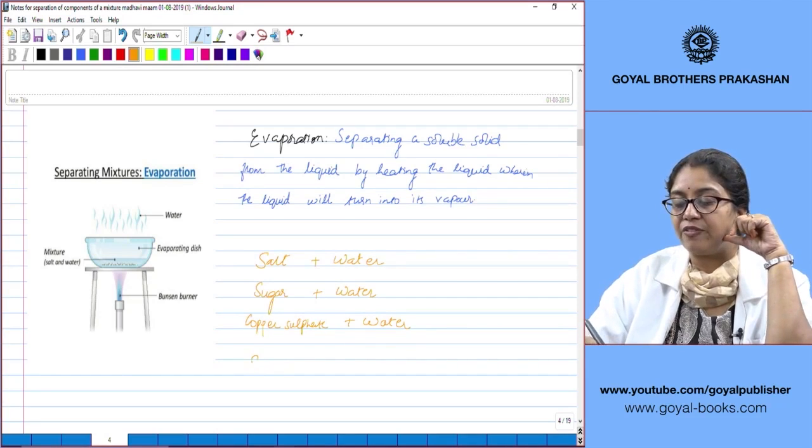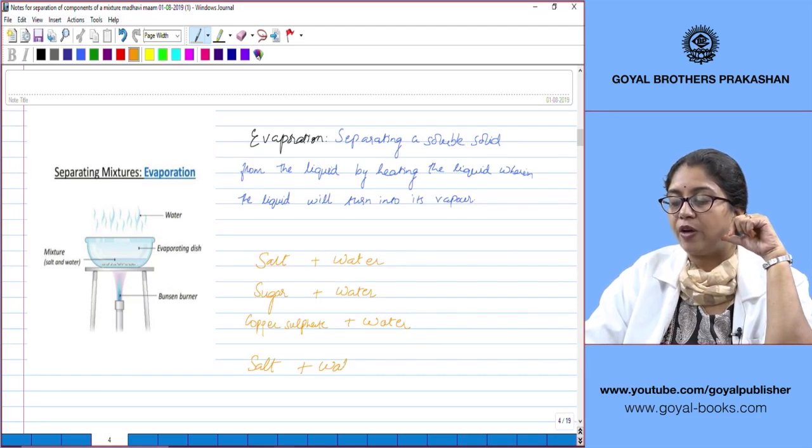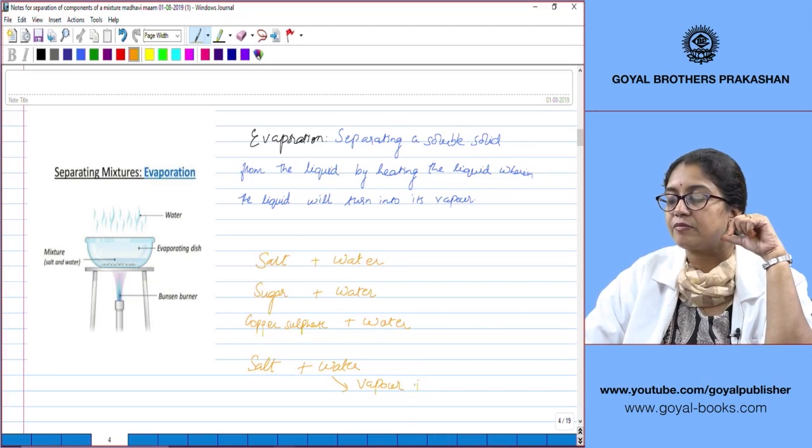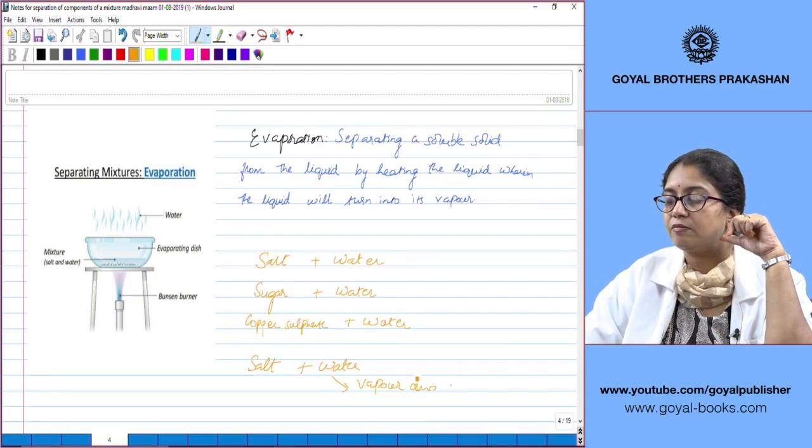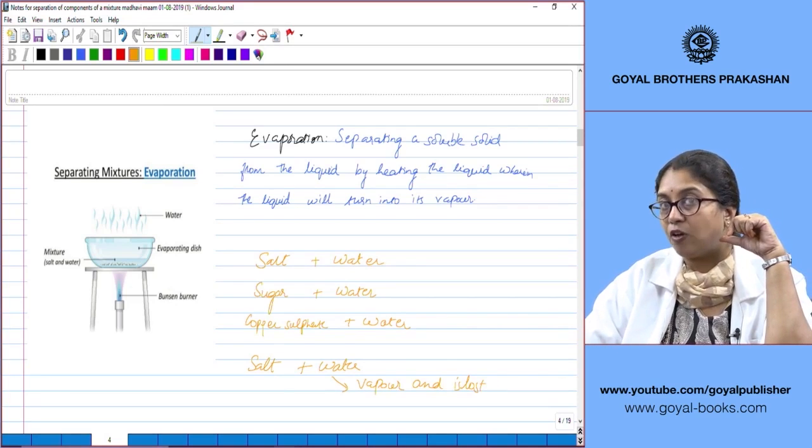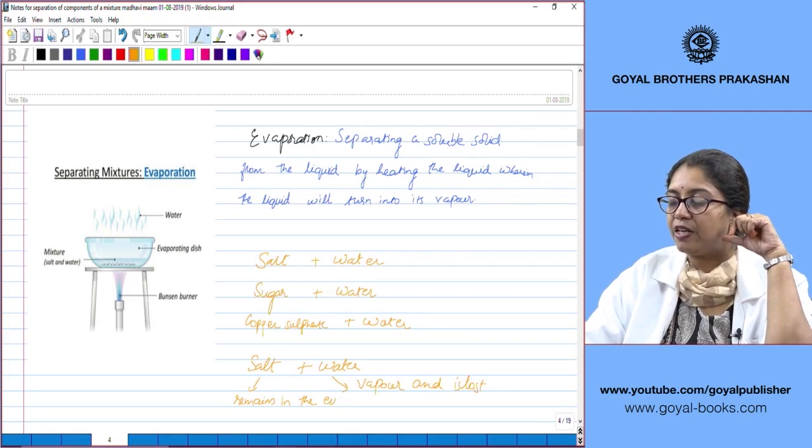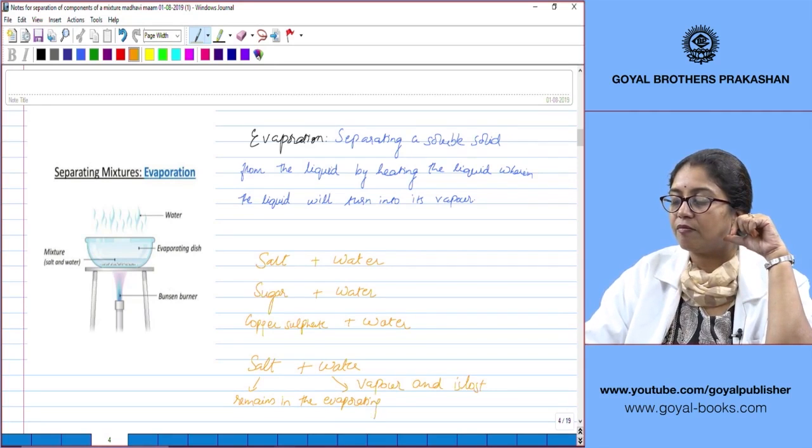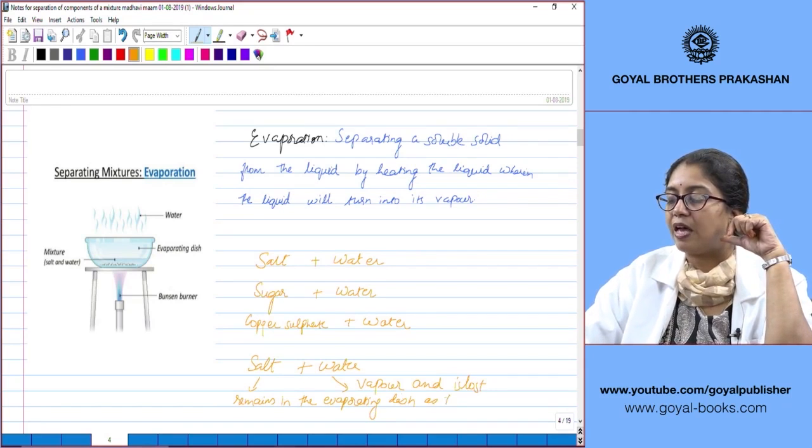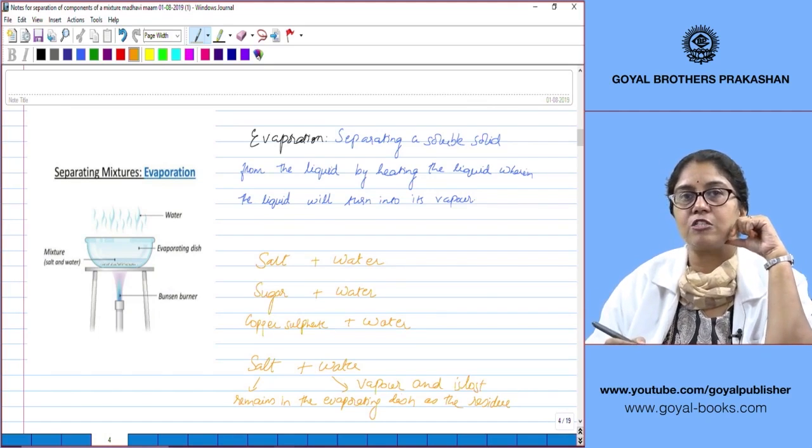If you take a mixture as we have discussed, salt and water, water is converted to vapor and is lost. You cannot retain the liquid component here, and the solid remains in the evaporating dish as the residue. This is the process of evaporation.